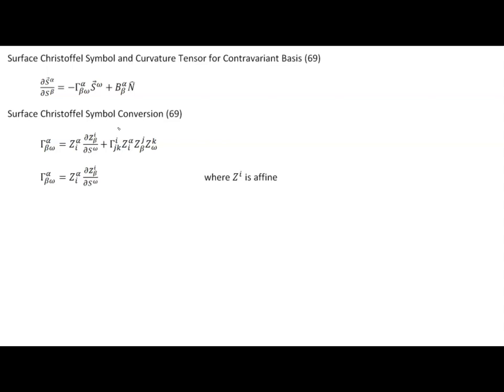The second result was deriving an expression for the surface Christoffel symbol in terms of the ambient Christoffel symbols and the shift tensors of the embedded space. This gives another method for computing Christoffel symbols on the surface manifold — start with known ambient values and apply the formula. In the special case where the ambient coordinate system Z_i is affine, all ambient Christoffel symbols vanish, and only the first term survives.